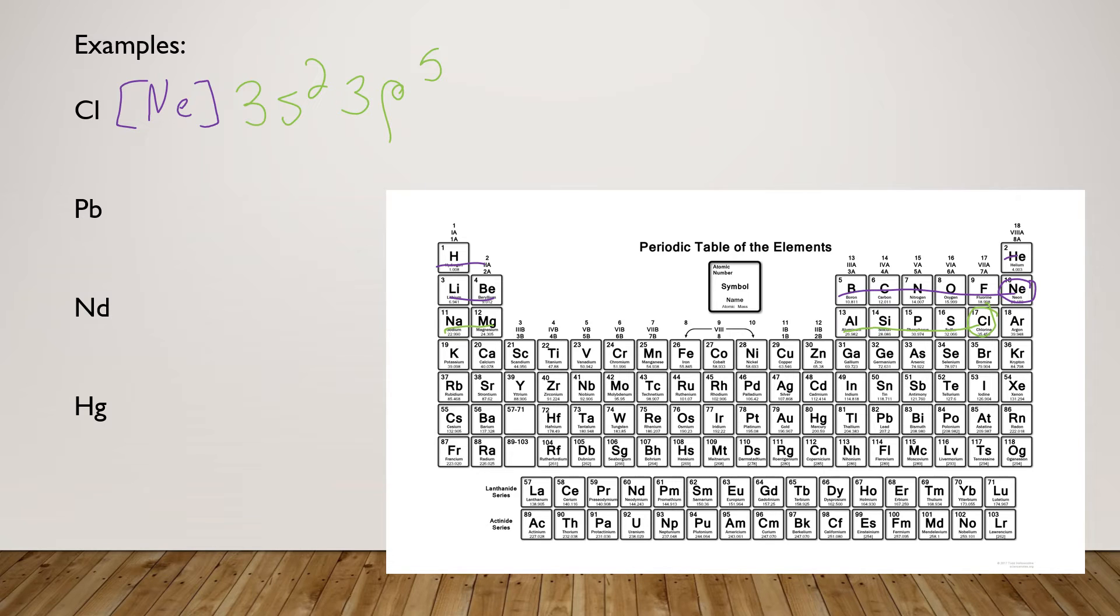Let's try the same thing for lead. Here is lead on your periodic table. Let's look for the noble gas before it, which is xenon. So we know that if we write down Xe, xenon in brackets, we have covered all of this already and don't have to worry about writing it down.